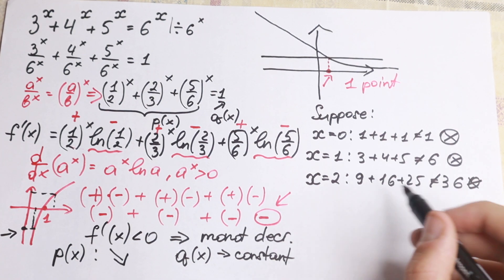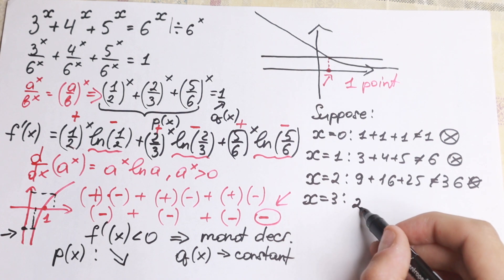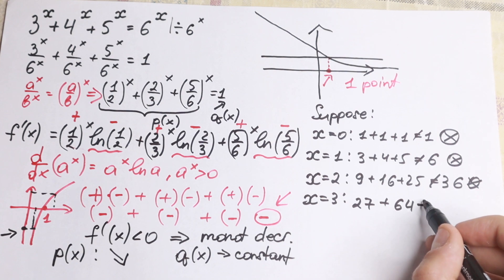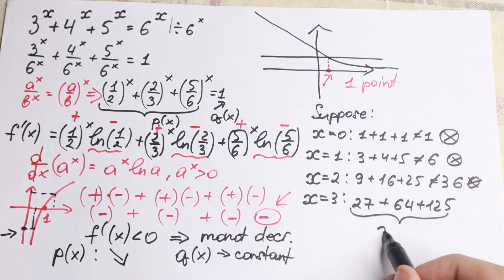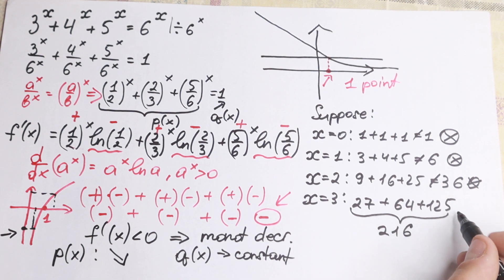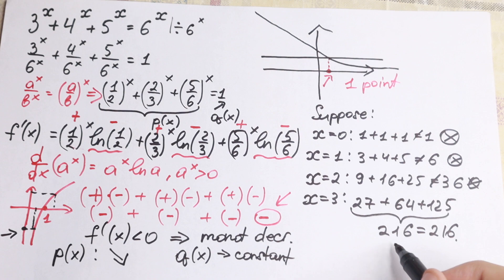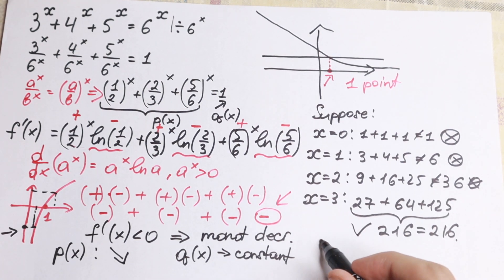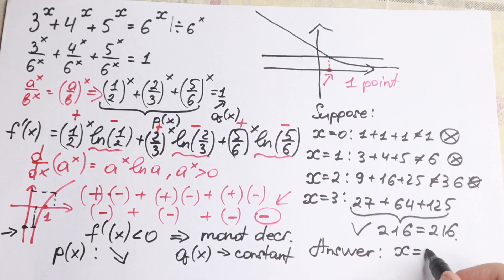Let's try x equal to 3. We will have 3 cubed which is 27, plus 4 cubed which is 64, plus 5 cubed which is 125. On the left hand side we have 216, and on the right hand side 6 cubed is also equal to 216. As you can see the left hand side equals the right hand side, so x equals 3.